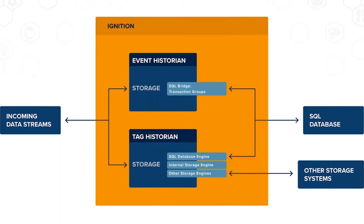Other storage engines are available to anyone who writes a module that plugs into the TagHistorian — they can send that information out wherever they want. These are called data sinks. Most integrators don't have a Java or computer programming background, so it often makes sense to leverage what module developers have already created. There are a couple of examples available, including cloud options coming up.